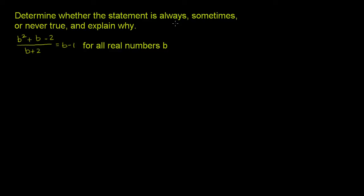Determine whether the statement is always, sometimes, or never true, and explain why. The statement here is b squared plus b minus 2, all of that over b plus 2, is equal to b minus 1 for all real numbers b.